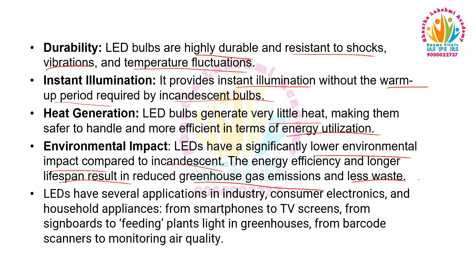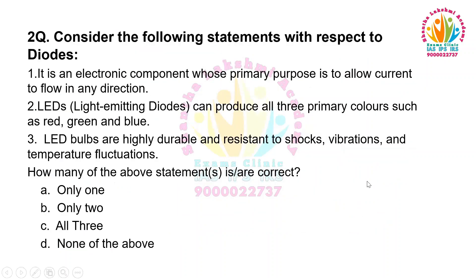LEDs have several applications across industry, consumer electronics, and household appliances — from smartphones to TV screens, from signboards to feeding plants and lighting greenhouses, from barcode scanners to monitoring air quality. So the answer is only 2, because a diode allows current to flow in only one direction.